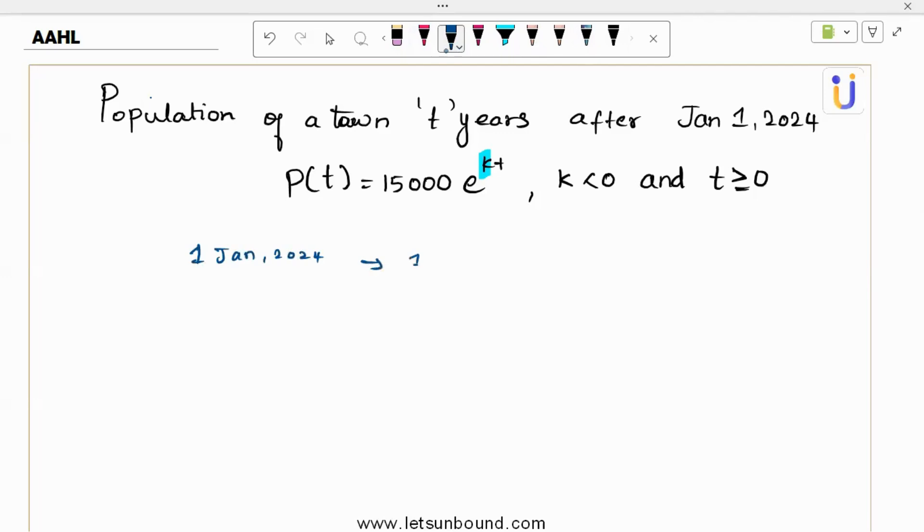And to January 1, 2022, in this particular time, that is 11% decrease in the population. This is the clue. So using this, we will find k, we will make the model complete, and then we will solve for the estimated population.